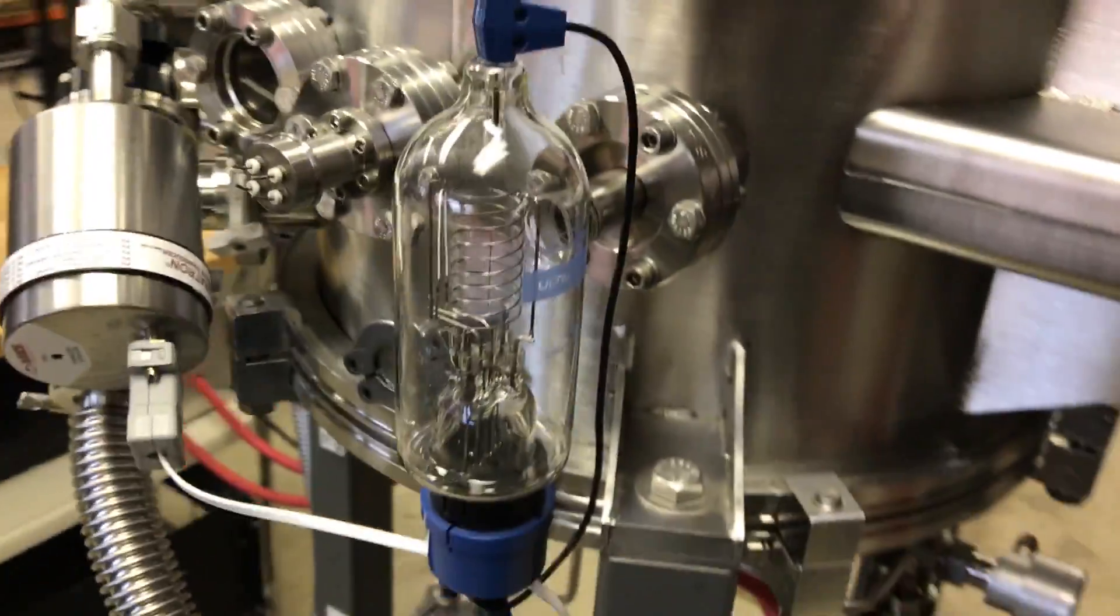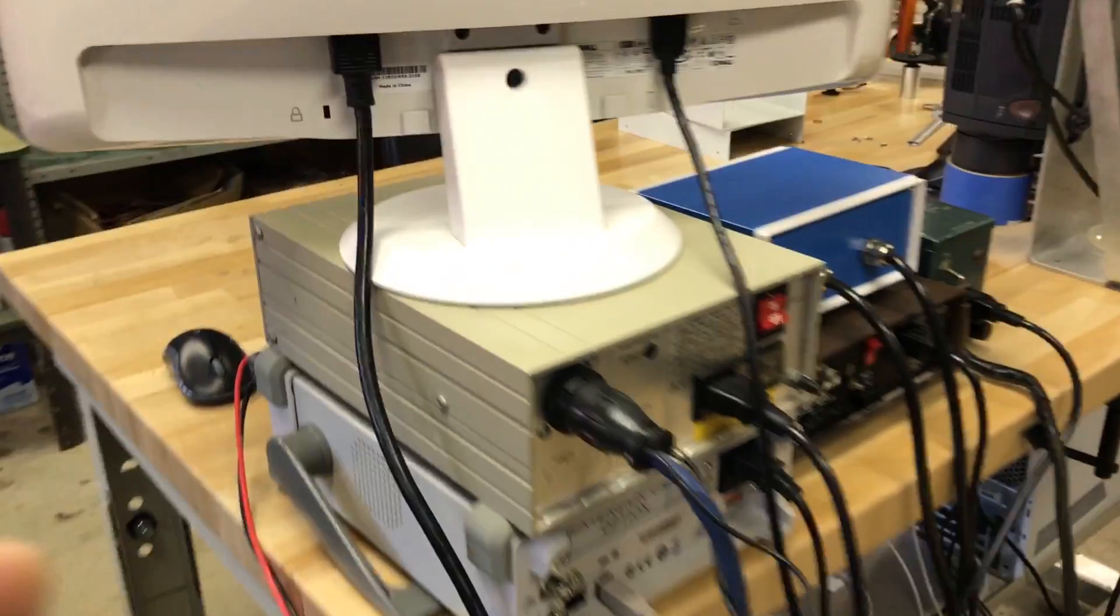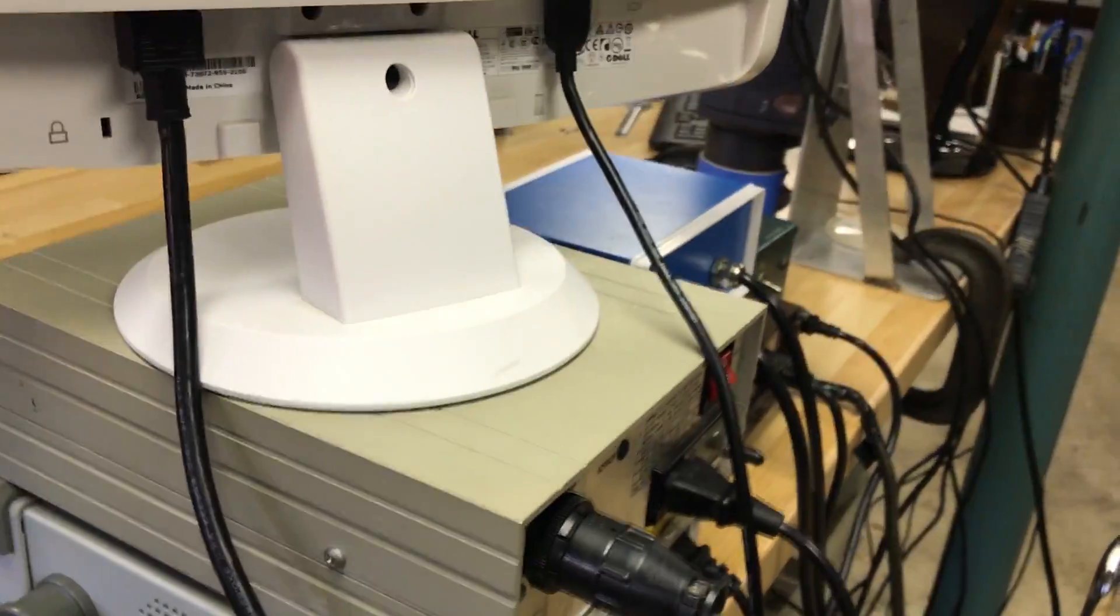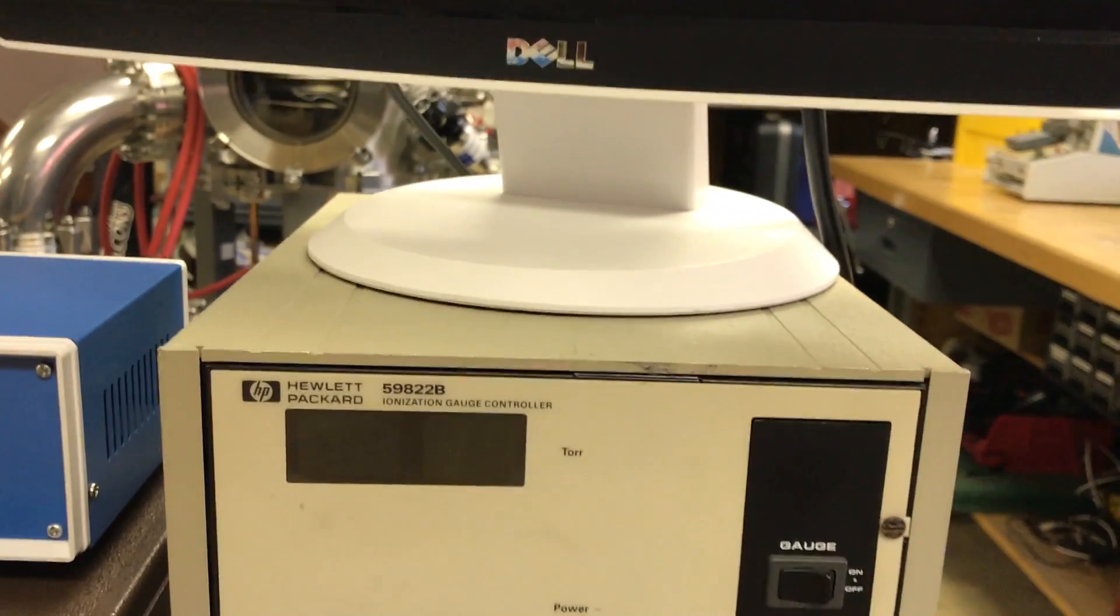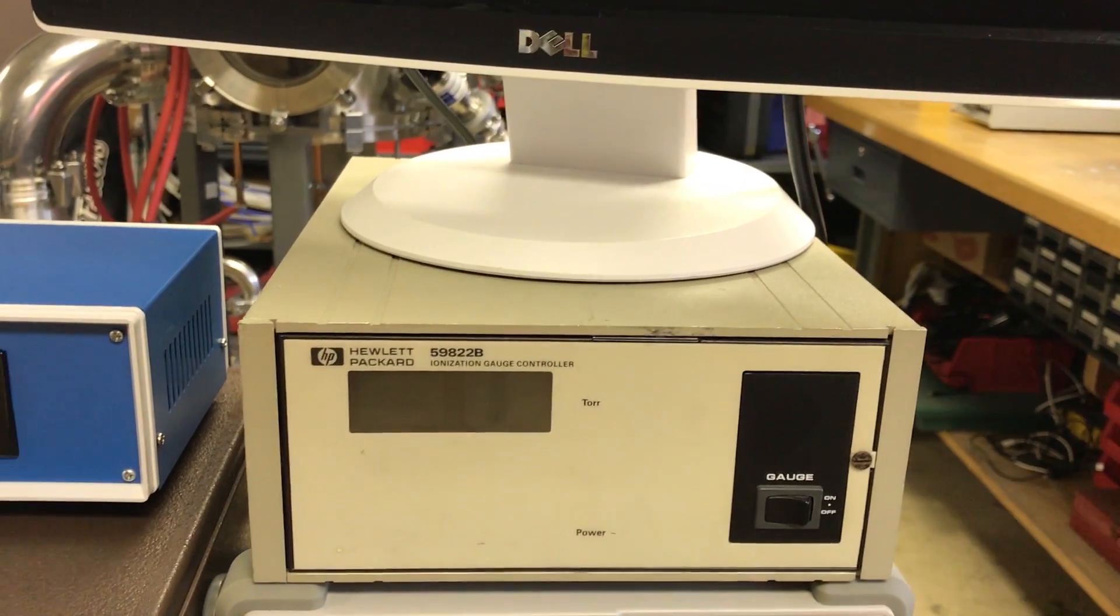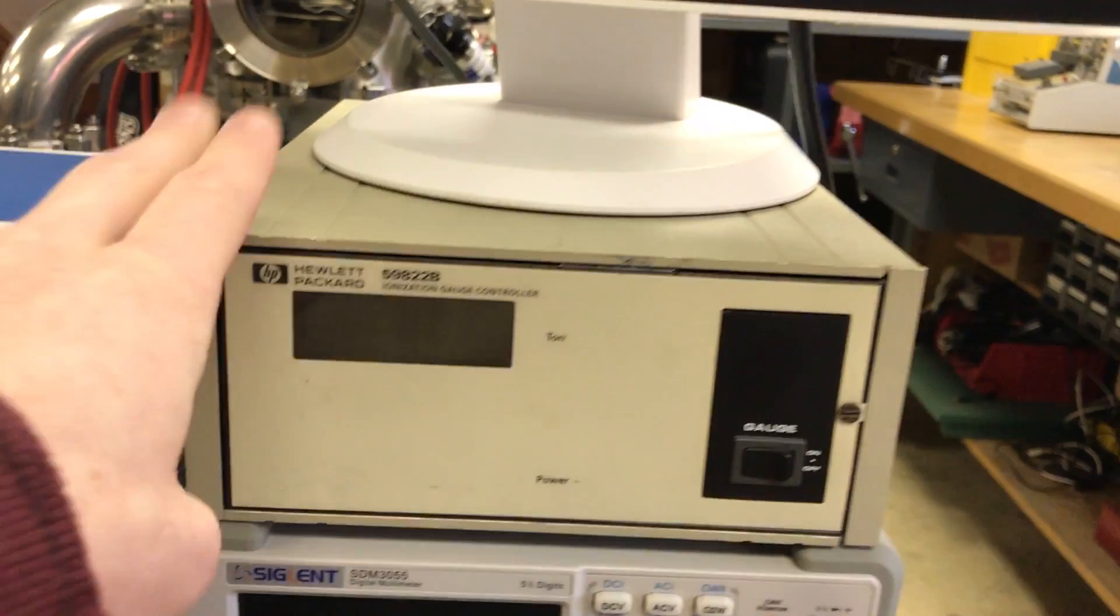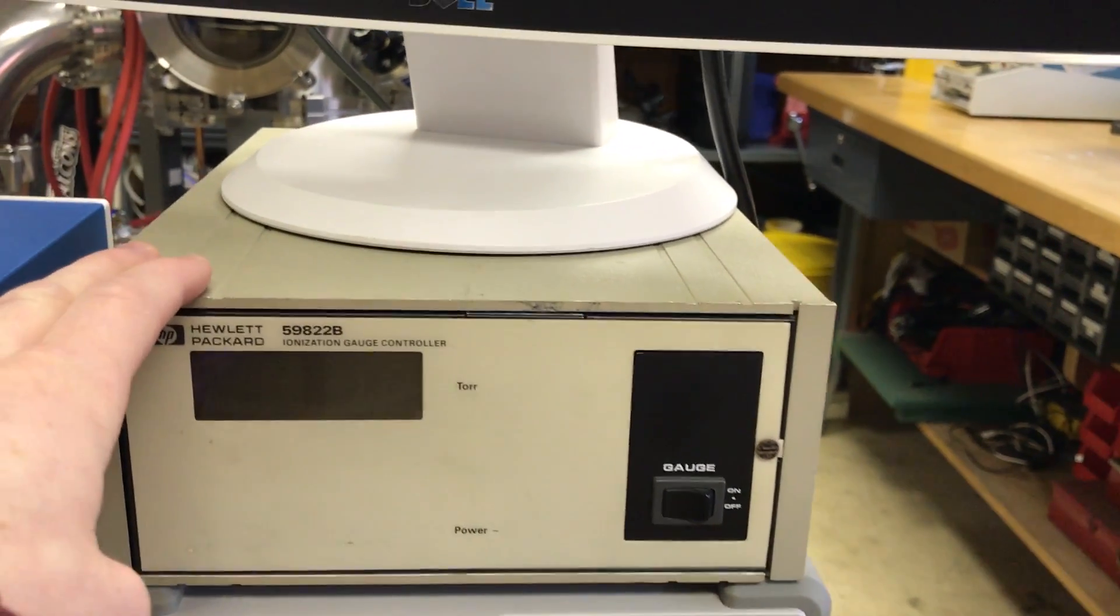And then that blue cable runs all the way over here to the HP ionization gauge controller, and that's right here. I can't turn this on until basically when I turn the turbo pump on. This can come on, otherwise the filament will burn out.